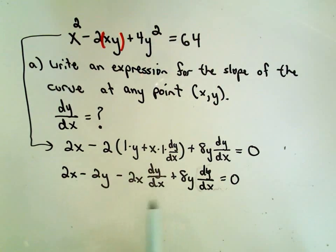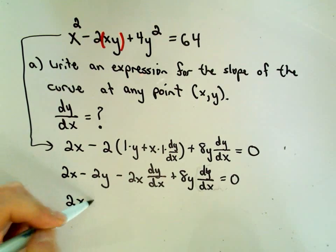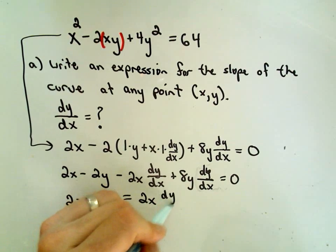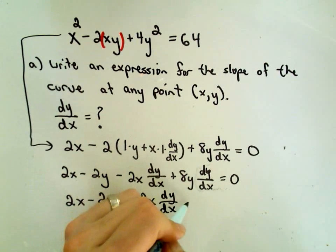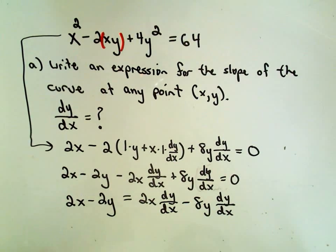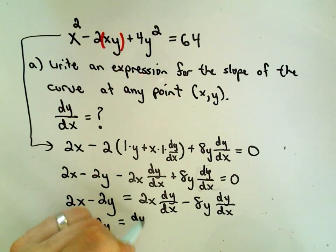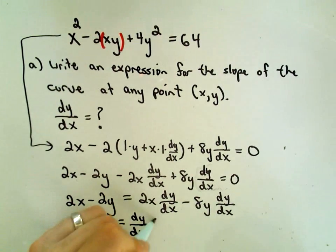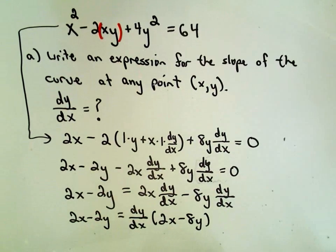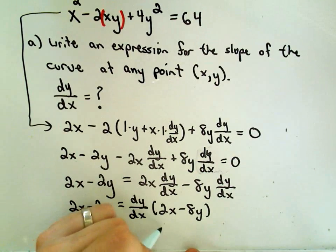So I'm going to put everything that has a dy/dx attached to it on one side of the equation, and then simply factor it out. So maybe I'll leave my 2x minus 2y on the left side. If I add on the right side, I'll get 2x dy/dx, and then I'll get negative 8y dy/dx. Simply factor out the dy/dx on the right-hand side.